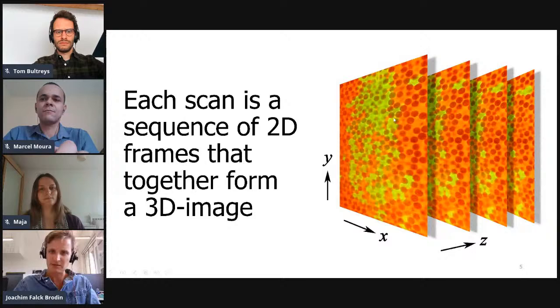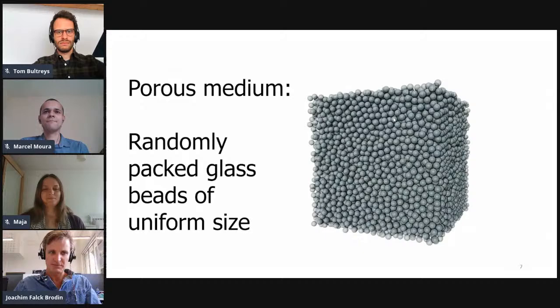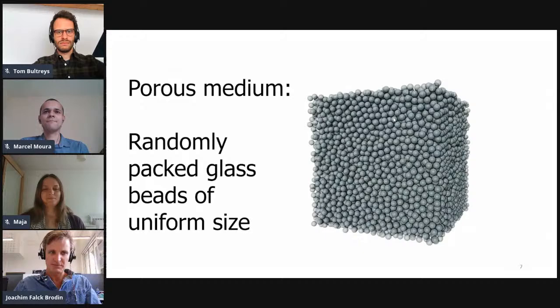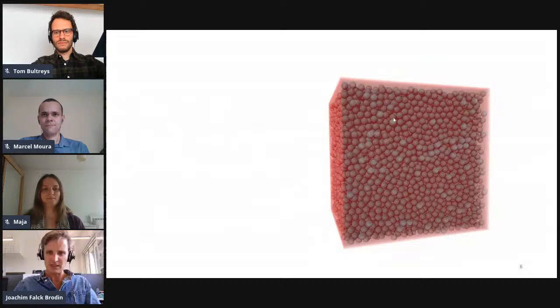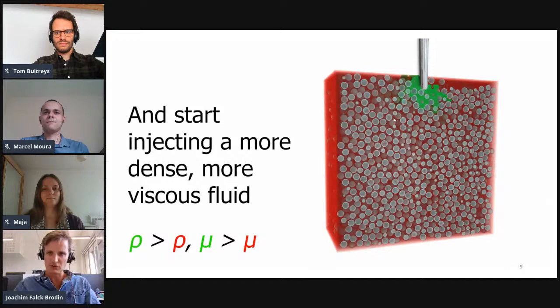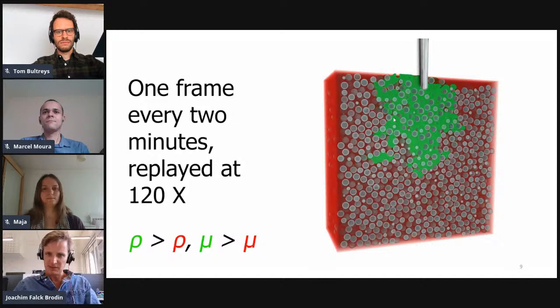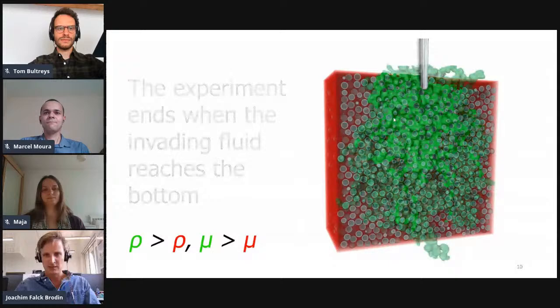This is our raw data. We link it together, then it's segmented and rebuilt as a 3D model. The porous medium is a randomly packed glass bead, all the same size — 3 millimeters in this case. The beads are in a cubic flow cell, about 8 by 8 by 8 centimeters. We start with a defending fluid with a red fluorescent dye, then inject another fluid from the top — green — which is more dense and more viscous. We capture one frame every two minutes, replayed here much faster, and run the experiment until the invading fluid reaches the bottom.